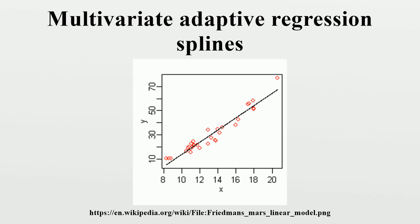We thus turn to MARS to automatically build a model taking into account non-linearities. MARS software constructs a model from the given X and Y. The figure on the right shows a plot of this function — the predicted versus X — with the original values of Y once again shown as red dots. The predicted response is now a better fit to the original Y values. MARS has automatically produced a kink in the predicted Y to take into account non-linearity. The kink is produced by hinge functions, which are described in more detail below.